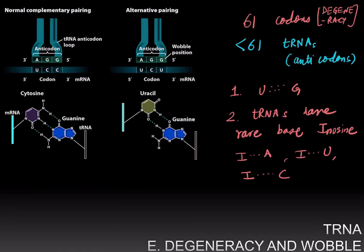And this is made possible because of modified base pairing that does not follow Watson-Crick rules. And because uracil can base pair with guanine and inosine can base pair with adenine, uracil, and cytosine in the wobble position. And altogether, this is known as the wobble hypothesis.